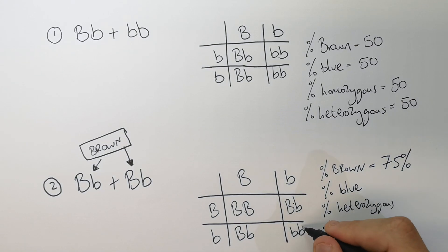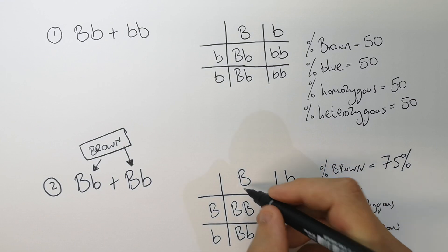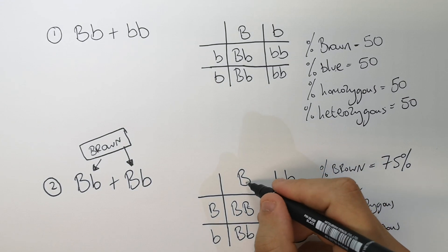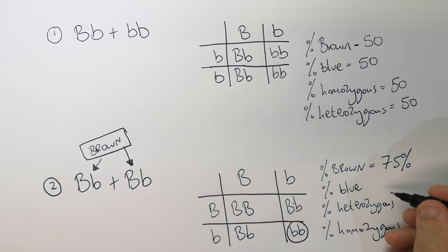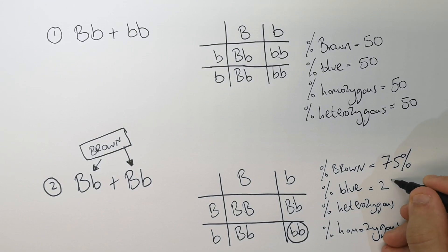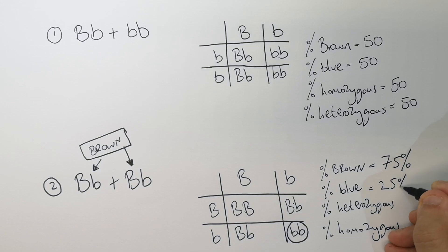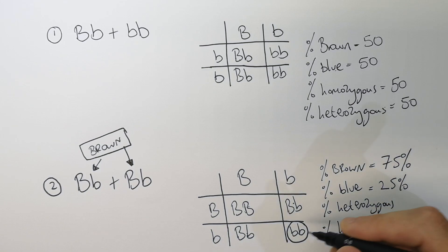Now the chance for blue eyes — remember that for blue eyes it has to be two recessive alleles, little b, little b. Because if the big B is present, like in the other three, that means it will be brown eyes. So the percentage chance for blue eyes is 25% — a one in four chance that two brown-eyed parents will have a blue-eyed baby.